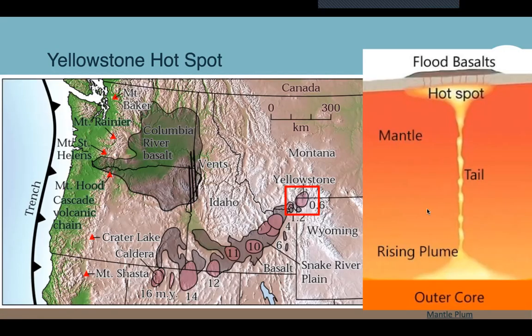On the right, we see a picture of a mantle plume, showing how excess magma rises to the surface, which causes the thinning of the crust above it. On the left is a picture from a lecture showing how as the plate moves across the mantle plume, it causes volcanoes to form behind it.